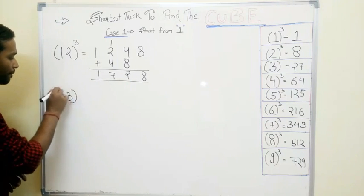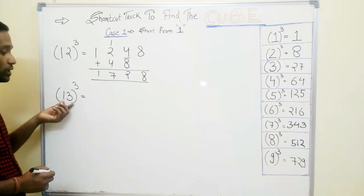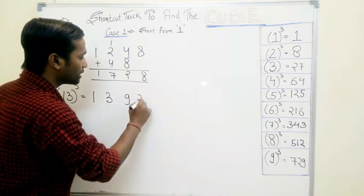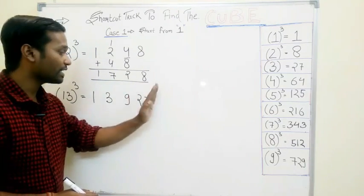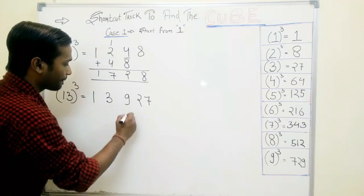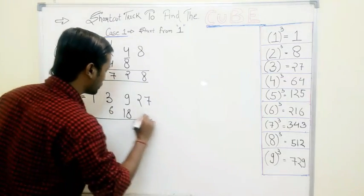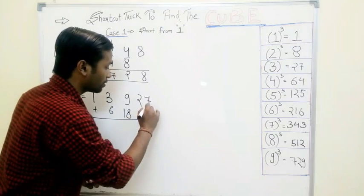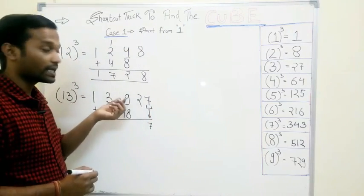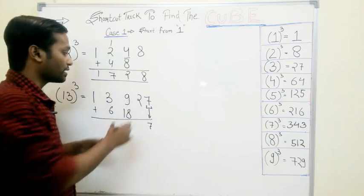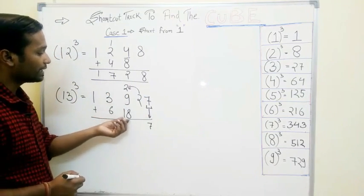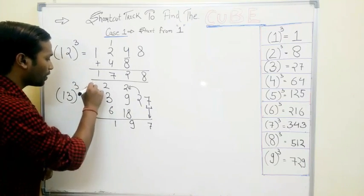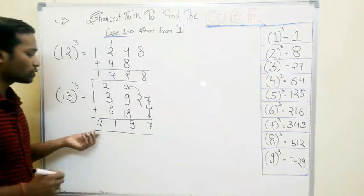Take another example: 13 cubed. Same pattern. Write these two numbers from the left: 1, 3. Square this number — that is 9 — and cube this number — that is 27. Leave the extreme right and extreme left and double these two numbers: 9 gives 18, 3 gives 6. Remember we write only the unit digit — that is 7 — and 2 as a carry. Don't take 20 as a carry, just 2. Adding: 18, 9, 27 gives 29, carry 2, then 6, 3, gives 9, carry 1, result 2. So our answer is 2197.